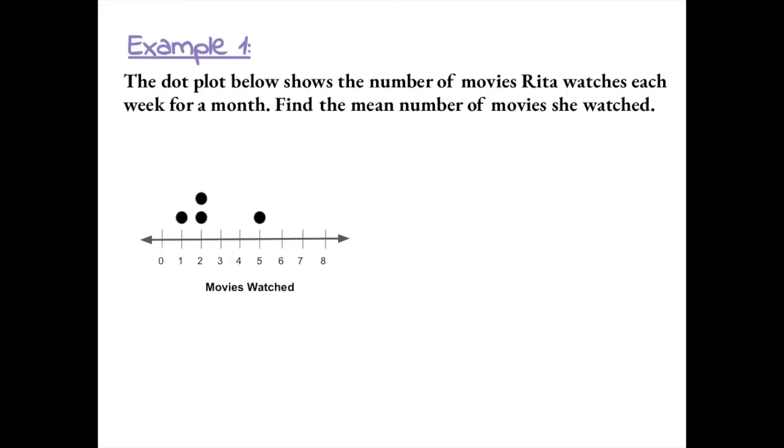Example 1, the dot plot below shows the number of movies Rita watches each week for a month. Find the mean number of movies she watched. So to find the mean, we have to add up all the numbers in the data set. So there is one dot for the number one, plus there's two dots for the number two, and then there's one dot for the number five. So we add up all the numbers in the set, and then we divide it by how many numbers are in the set. So there are one, two, three, four numbers in the set. So we're going to divide this sum by four.